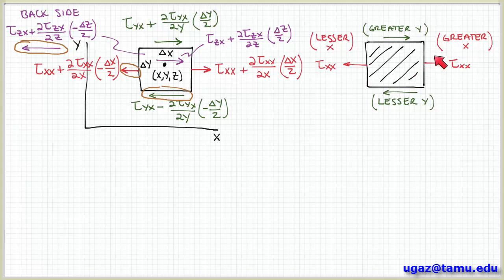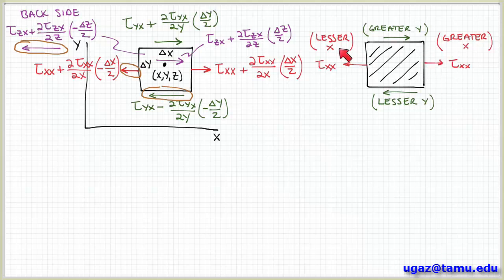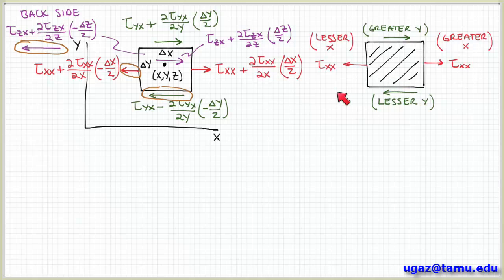For example, this fluid acting on this surface is at a greater value of x than the position of the surface, so this is defined as a positive stress. Here the fluid at a lesser value of x is acting on the surface at a greater value of x, so this is negative. And you can see similar behavior for the shear stresses on the y surfaces.